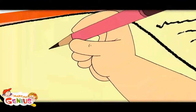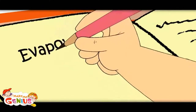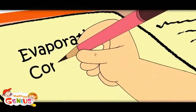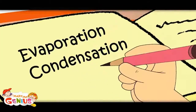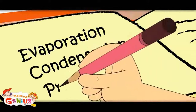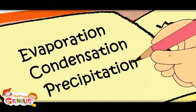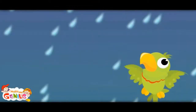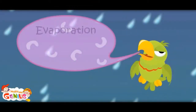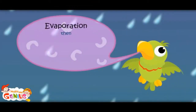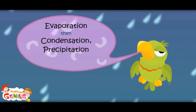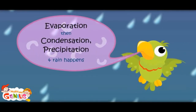Let me note it down: first, evaporation happens. Then water molecules come close and condensation happens. Then drops become bigger and heavier and precipitation happens. So: first evaporation, then condensation, then precipitation — and then rain happens!